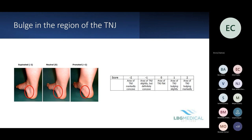Then there's bulging in the region of the talonavicular joint. At zero, that area is pretty flat. As you move towards pronation, you start to see more of a convex bulge there, whereas in a supinated foot you see a divot or dimple, which you would score more minus for.